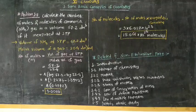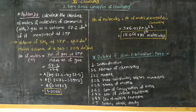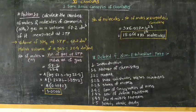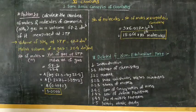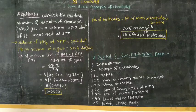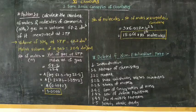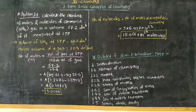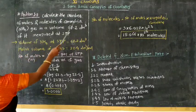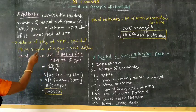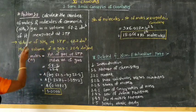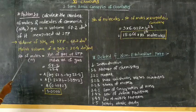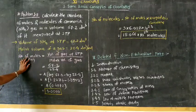The last numerical of this chapter. Problem 1.7. Calculate the number of moles and molecules of ammonia NH3 gas in a volume 67.2 dm cube of its measure at STP. What is asked to calculate? Number of moles and molecules. How we can calculate number of moles? Number of moles denoted by small n.